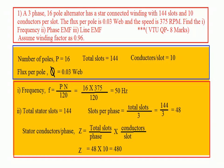Write down the given data: number of poles = 16, total number of slots = 144, conductors per slot = 10, flux per pole = 0.03 webers. All data are directly given — this same problem is asked a number of times in the V2 examination. Frequency F is not given, so we use F = PN/120. Therefore F = 16 × 375 / 120 = 50 Hz.